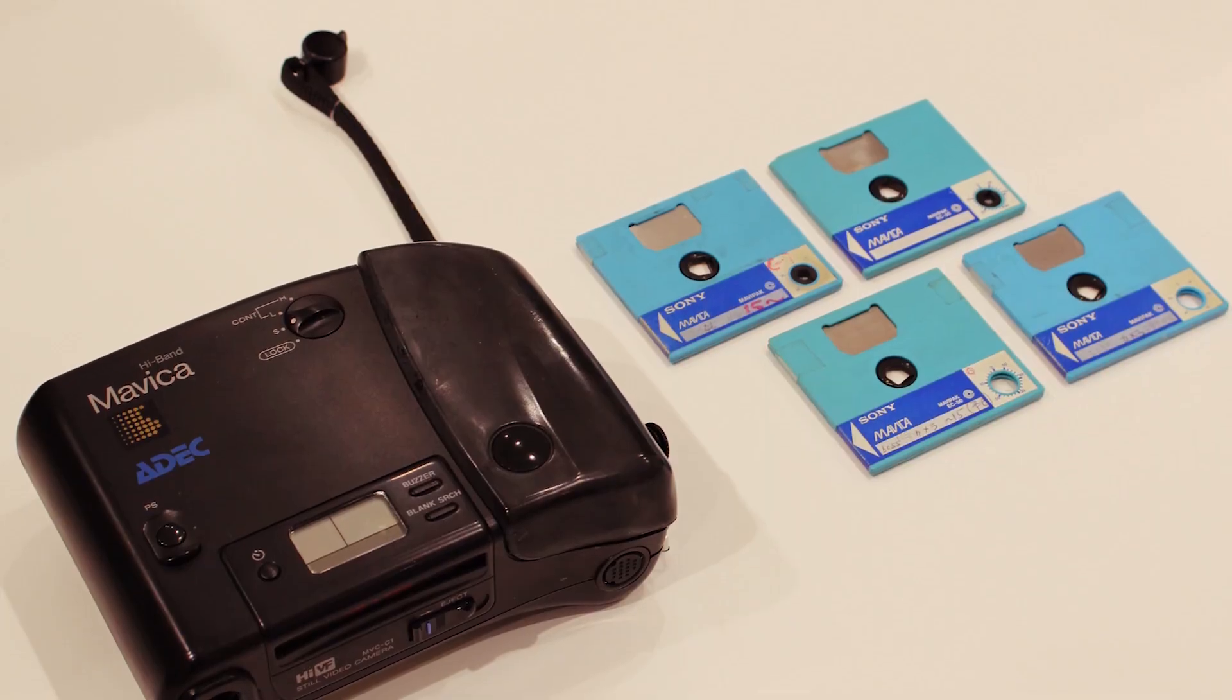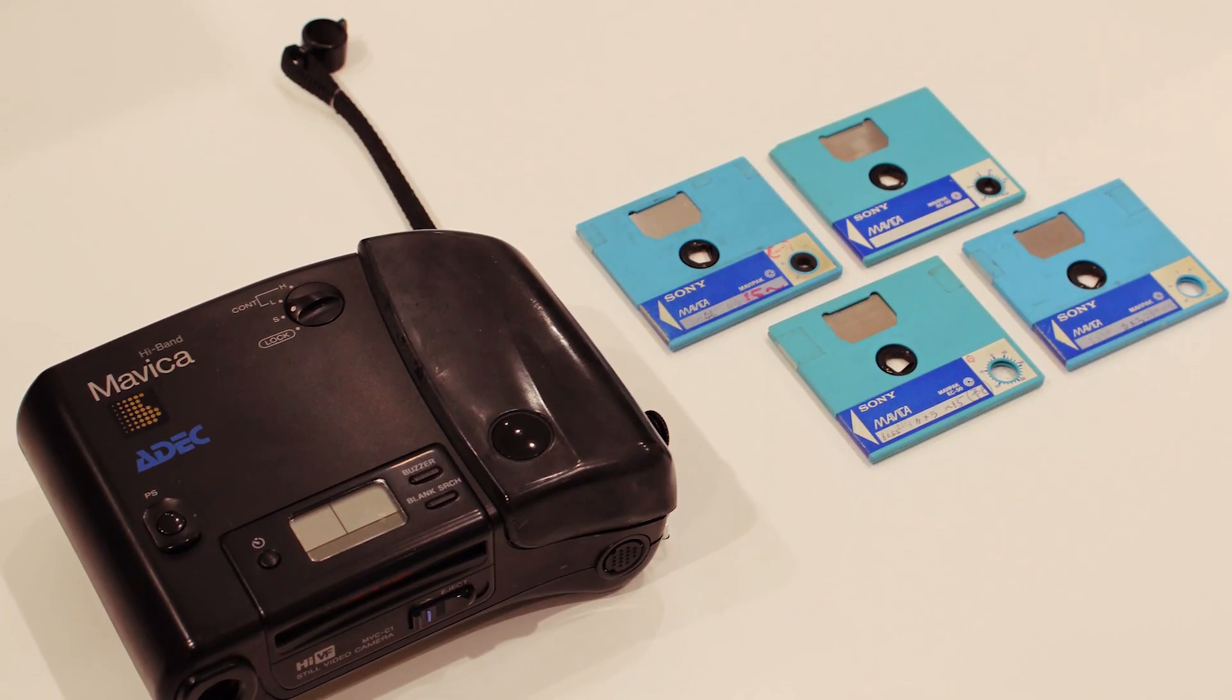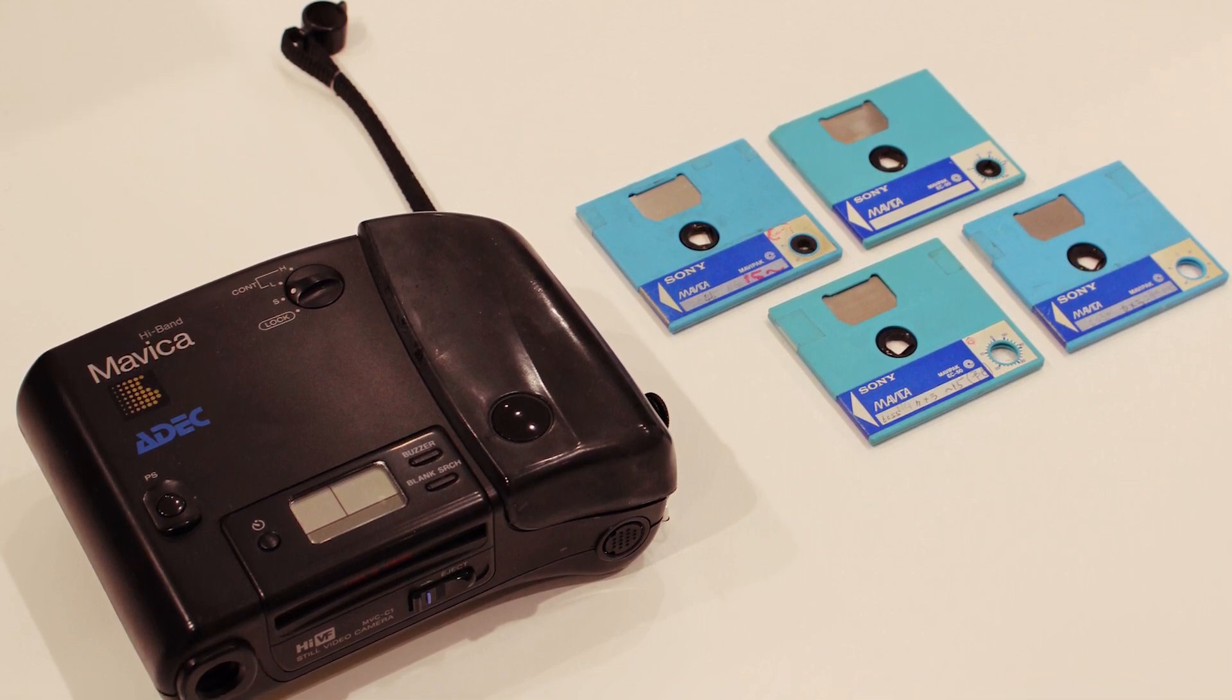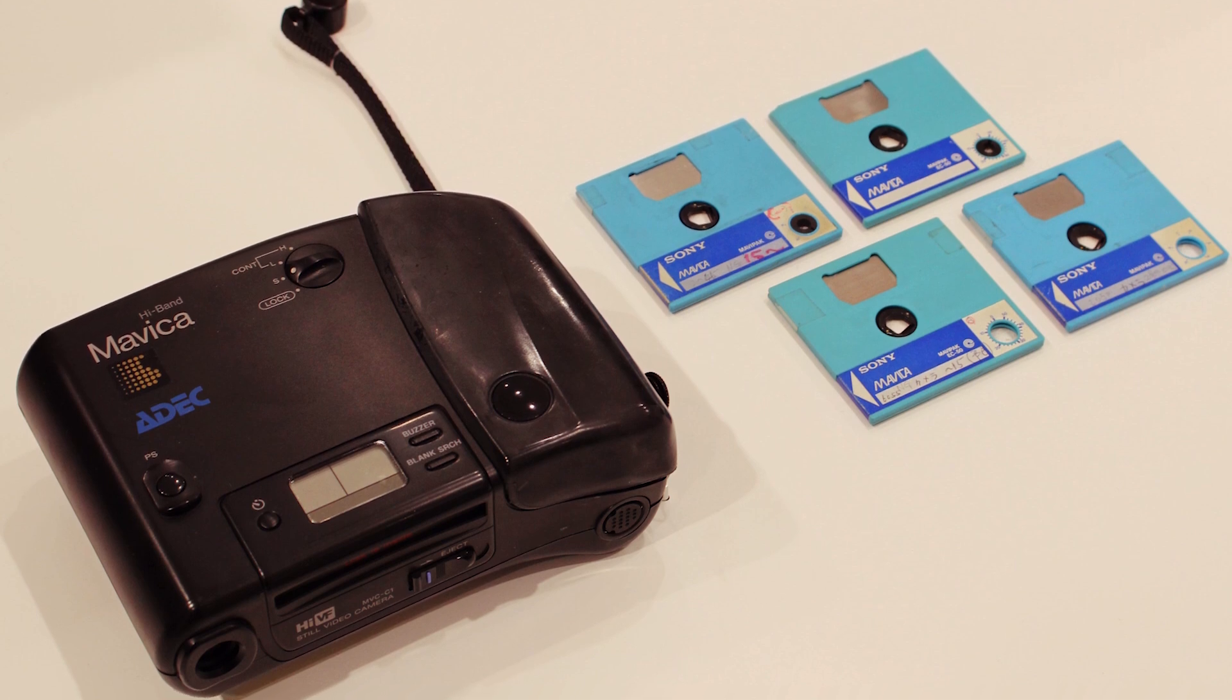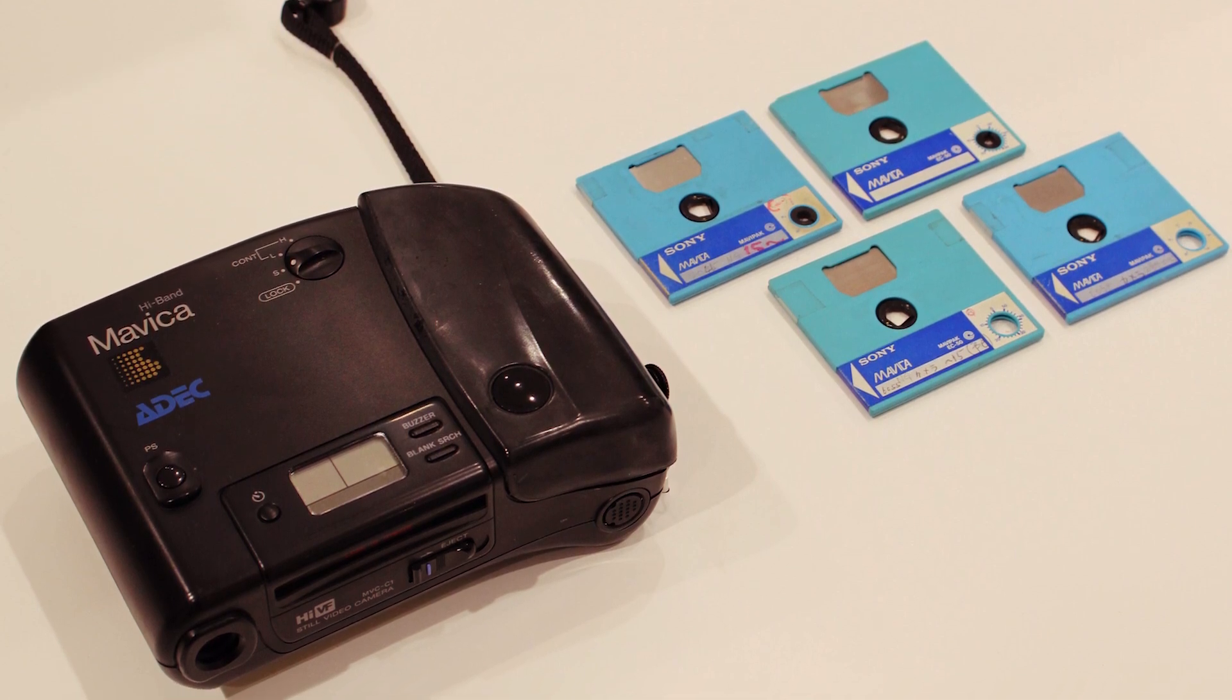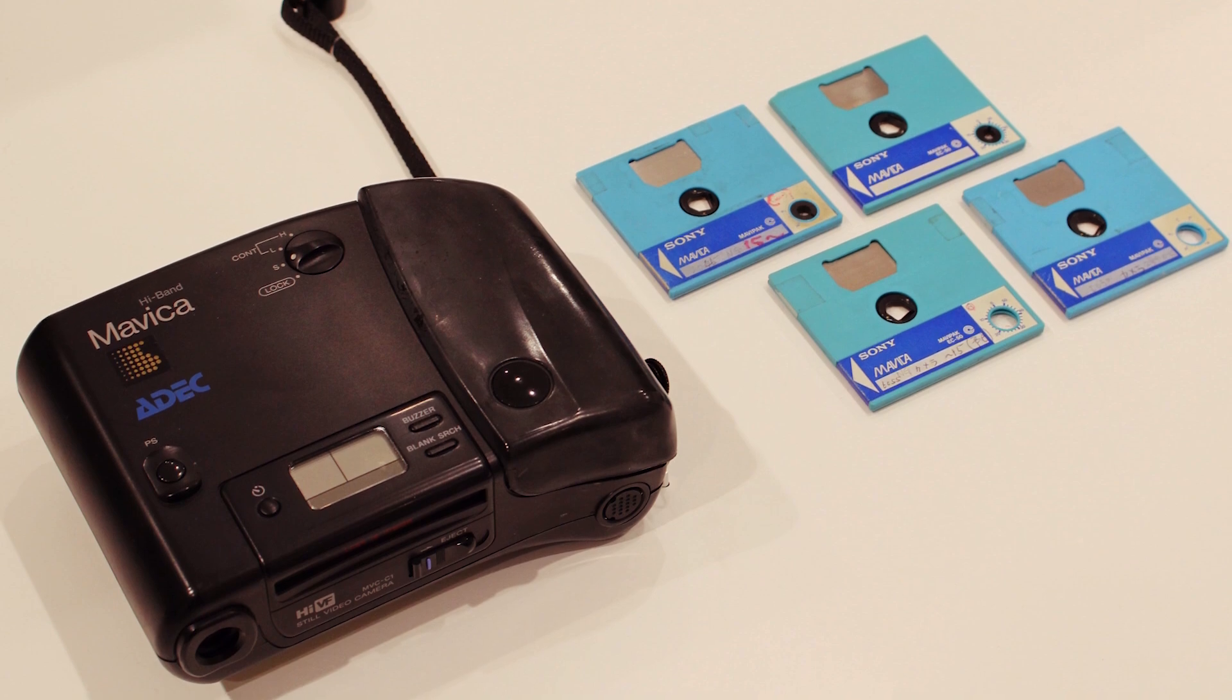Thus, the first commercially available digital camera was not produced by Kodak, but was the Sony Mavica, released in 1981. It had a resolution of 0.27 megapixels, could store 50 images on a floppy disk, and displayed said images by being plugged into a television screen.